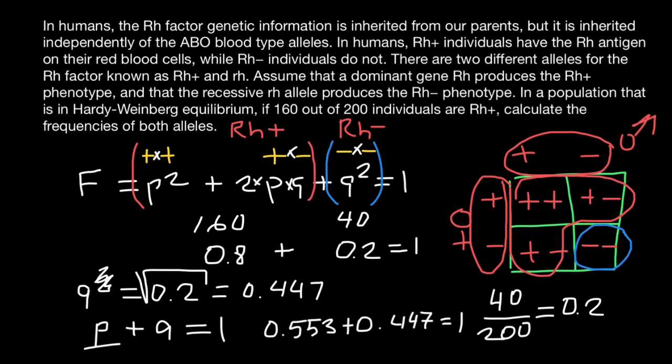So as you see, now we gave an answer to our question. So our question was: in a population that is in Hardy-Weinberg equilibrium, if 160 out of 200 individuals are Rh positive, calculate the frequencies of both alleles. And this is the frequencies of the alleles. This is the frequency of the allele p, or positive allele, and this is the frequency of the allele q, or Rh negative allele. And this is all for today.